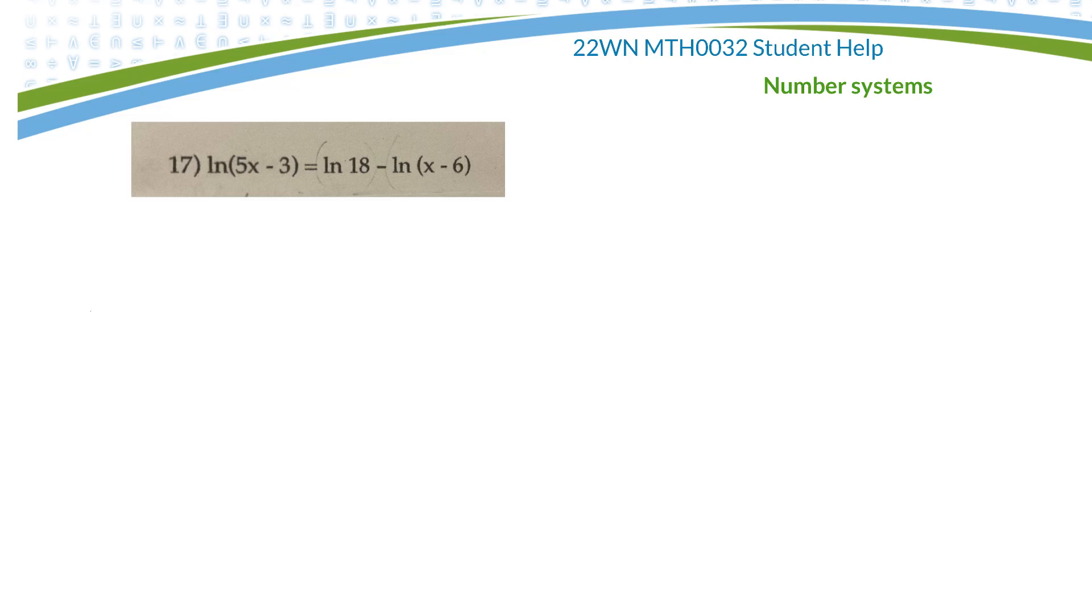Here's a beautiful log question. Let's solve it. So it looks like I have a ln on this side, and then I have two lns on this side. Since there's a subtract, I can squish those using the quotient log. So I'll have ln of 5x minus 3 equals ln of 18 over x minus 6.